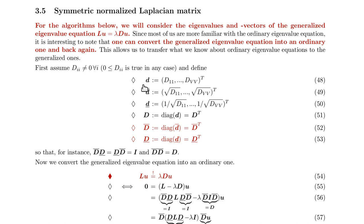If we define vector d as the diagonal elements of our weighted degree matrix and then take the square root or the inverse of the square root of that, we can define the diagonal matrix versions of that.